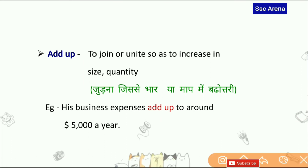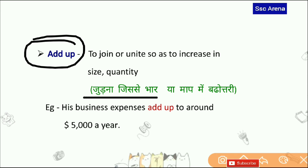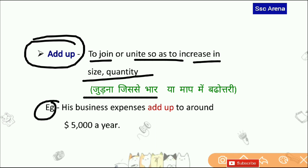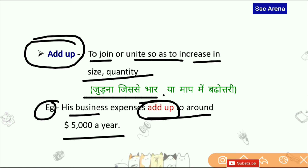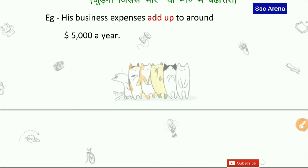यह काफी important है — Add Up. Add Up का मतलब होता है sum up करना, या अलग-अलग चीज़ों को जोड़कर इकट्ठा करना — to join or unite so as to increase in size or quantity। Example: His business's expenses add up to around $5,000 a year। Add Up का मतलब है इकट्ठा करना या increase करना।